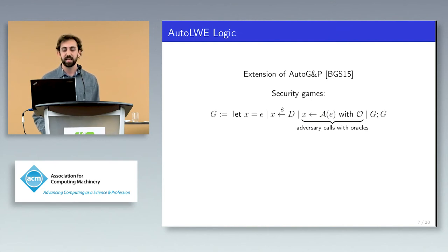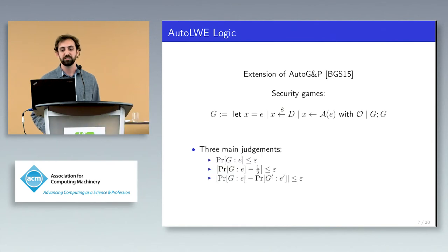When I execute a security game, I will receive a distribution on final program memories. There are three main judgments in AutoLWE about these distributions. The first says that when I run a game G, some event E holds about the memory with probability at most epsilon. The second is similar, but talks about advantage rather than a success probability. The third says that two probabilistic events, E on G and E prime on G prime, happen with close probabilities. This is how we model hardness assumptions. In the paper, you can see how these judgments are used for simple program transformations, optimistic sampling, and so on.